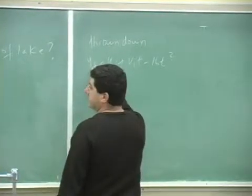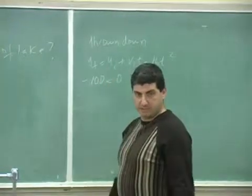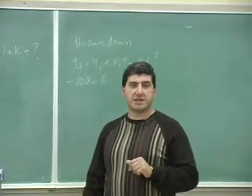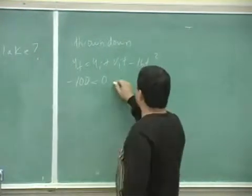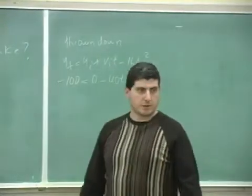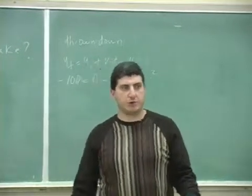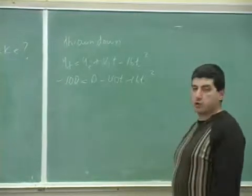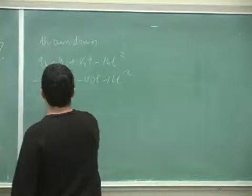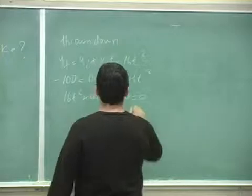So y-final is going to be negative 100. Y-initial is zero. The initial, since you threw it down, the initial is negative 40. So that's right. That's what's happening, you see? It ends up 100 feet below you, so that's a negative 100. You threw it down, so it's negative 40. So now you solve this quadratic equation. Take this to the other side. 16t squared plus 40t minus 100 equals zero.